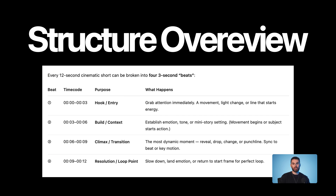Here's a simple structure overview which you can adapt to your own niche or video type. The longest video you can currently generate is 12 seconds. The first 0–3 seconds you have your hook or entry. Then 3–6 seconds, you build some context. 6–9 seconds, you climax or transition. And finally, 9–12 seconds, there is a looping point or your resolution.